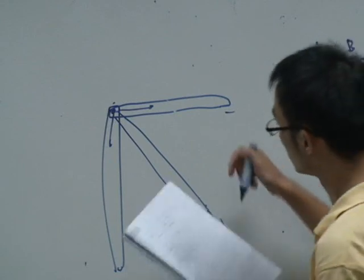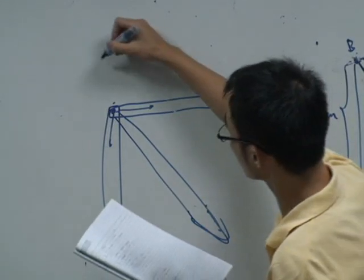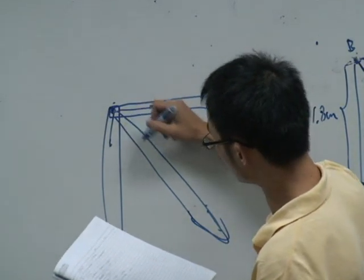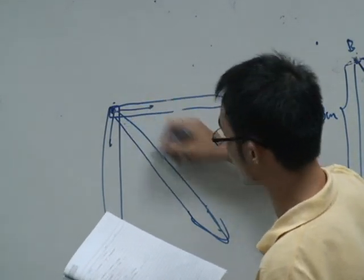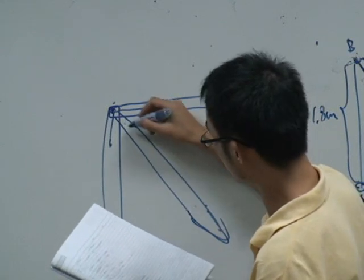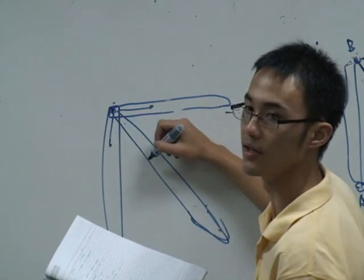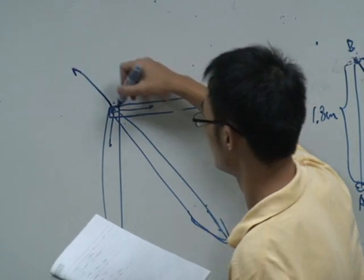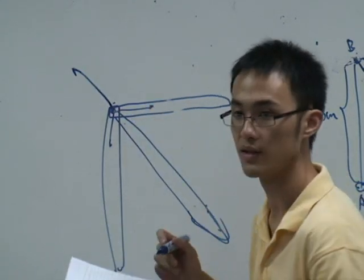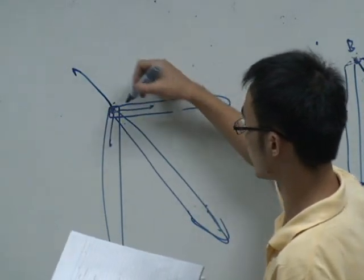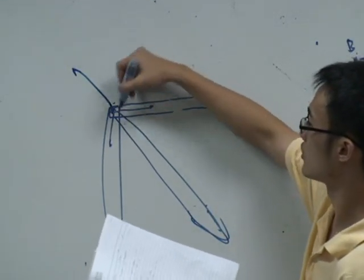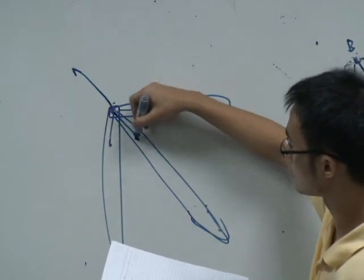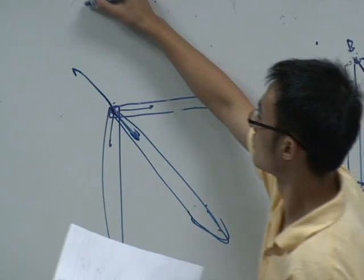So every time we can just consider the joints. For example, here, let's look at the joint B. Joint B, as we know, the force inside BD is a tensile force. So it's like this B is trying to pull, pull this BD, right?